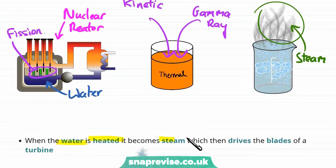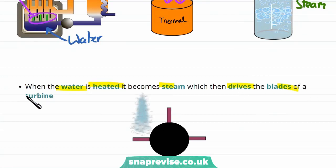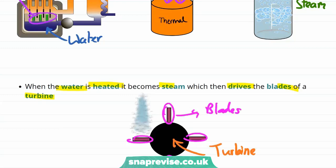Well, when the water is heated to become steam, this steam can be used to drive the blades of a turbine. So here is our turbine and this turbine has blades which can be pushed to make the turbine spin. We fire our steam at the blades of the turbine to make the turbine spin.